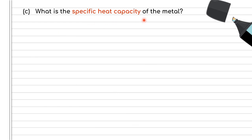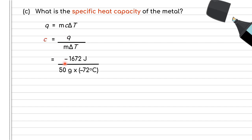Question C asks for the specific heat capacity of the metal. We need the metal's mass (50 g), Q (−1672 J), and ΔT. The metal cools from 100°C to 28°C, giving ΔT = −72°C. Rearranging Q = mcΔT to solve for c: c = −1672 J ÷ (50 g × −72°C). The negatives cancel, giving a positive value. We get c = 0.46 J/g°C, which is the unit for specific heat capacity.